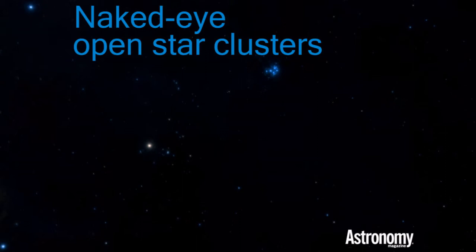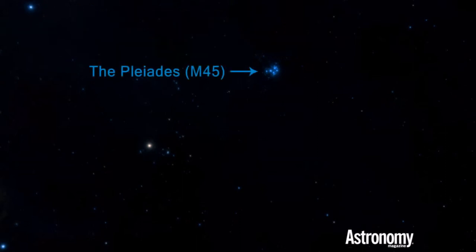Our first stop will be with the most famous open cluster, the Pleiades. Also known as M45 and the Seven Sisters, the Pleiades is located in Taurus the Bull.